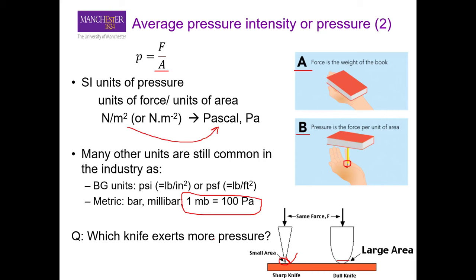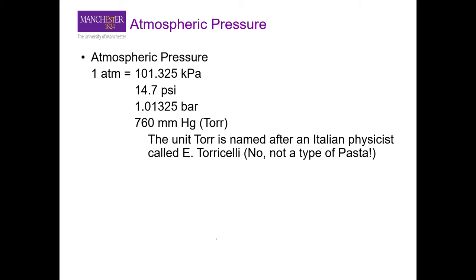Atmospheric pressure is the pressure that the atmosphere of Earth exerts on any object at the surface of the Earth. One atmospheric pressure is equivalent to approximately 100 kilopascal in SI units. It can also be expressed in other units such as psi, bar, and millimeter of mercury. Millimeter of mercury is a unit used for very low pressures or vacuum pressures.